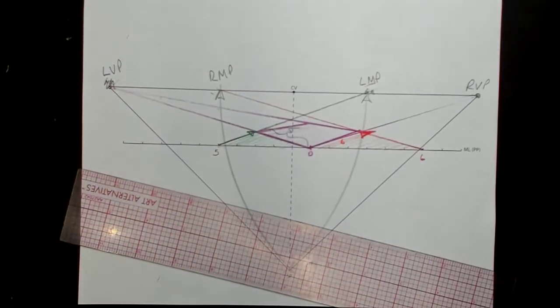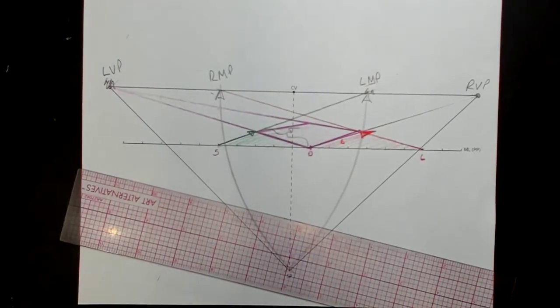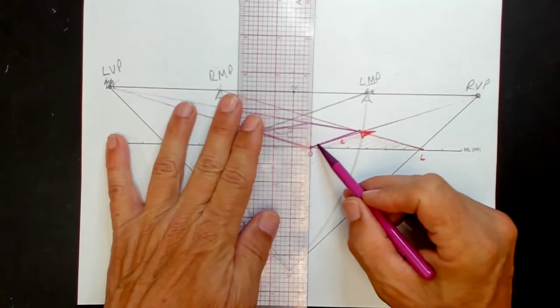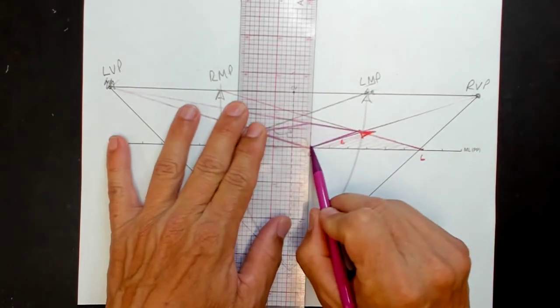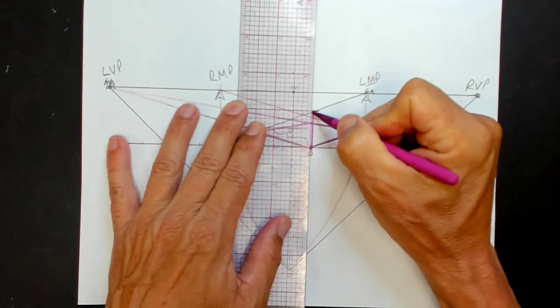And we can add some height to this. So vertical dimensions in two point perspective, they're exactly like one point perspective. Vertical lines are just vertical lines. There's no perspective to them. Vertical lines are parallel to the picture plane. So they're not foreshortened. And so you can just measure those with a ruler. So if I wanted this to be, let's make it two, two tall, I can put my ruler here and come up two units, which is right there.